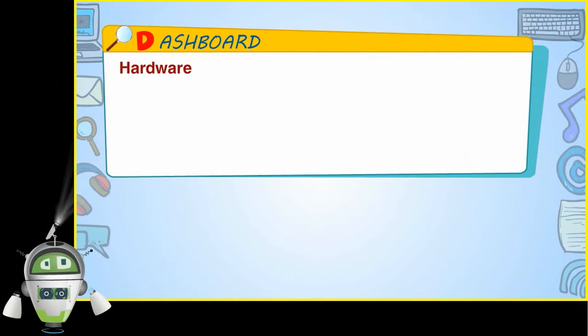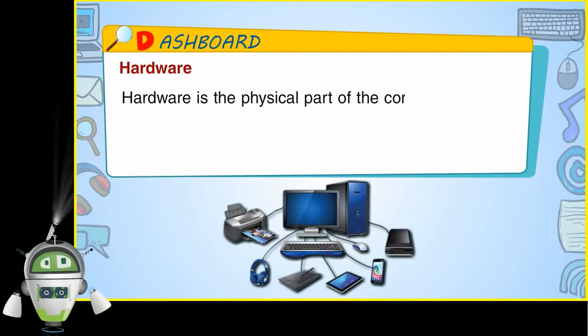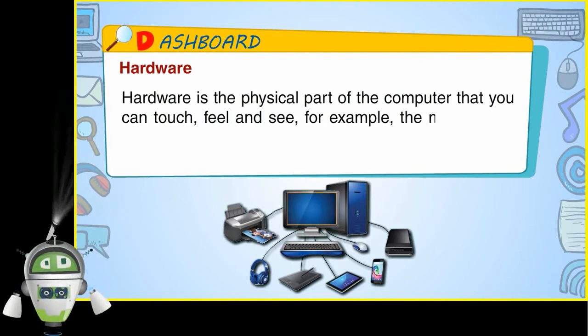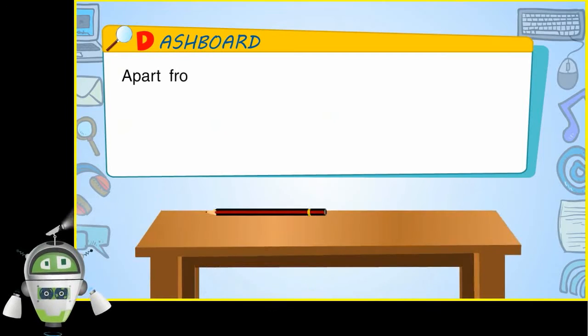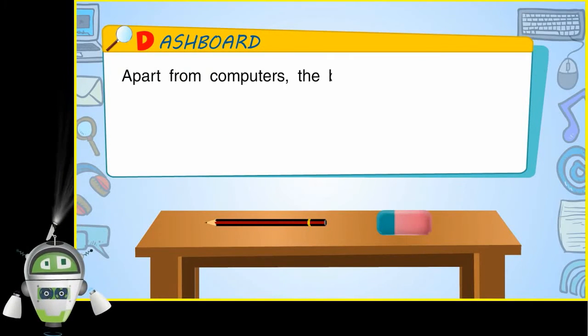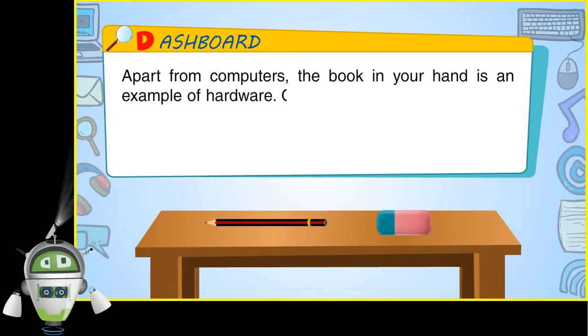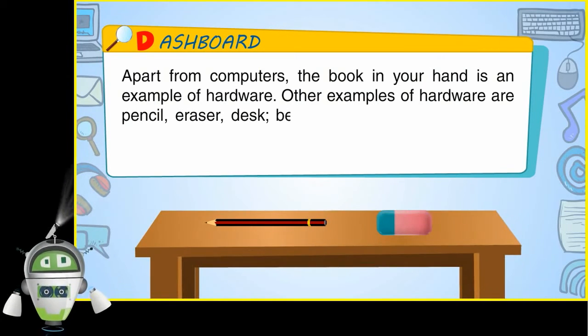Hardware is the physical part of the computer that you can touch, feel and see. For example, the monitor, the keyboard, the mouse and much more. Apart from computers, the book in your hand is an example of hardware. Other examples of hardware are pencil, eraser, desk, because you can touch and feel these things.